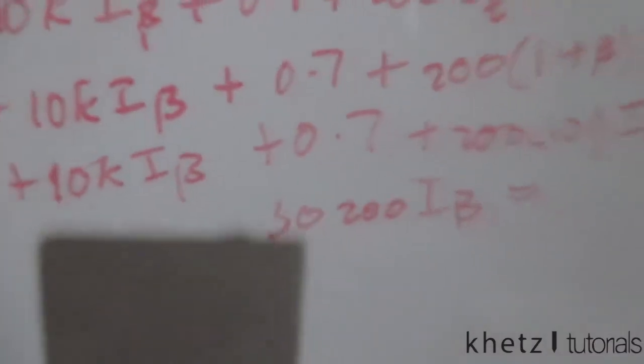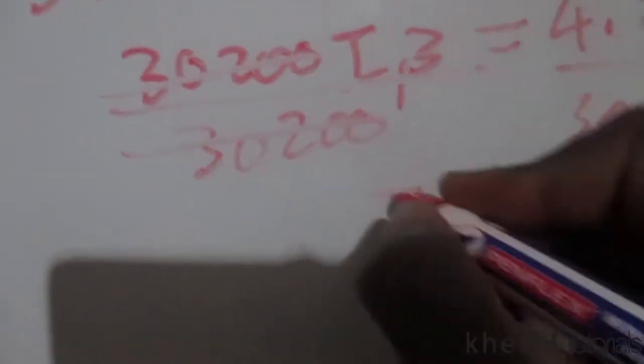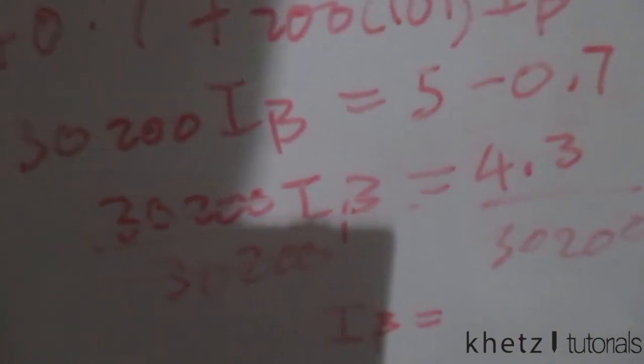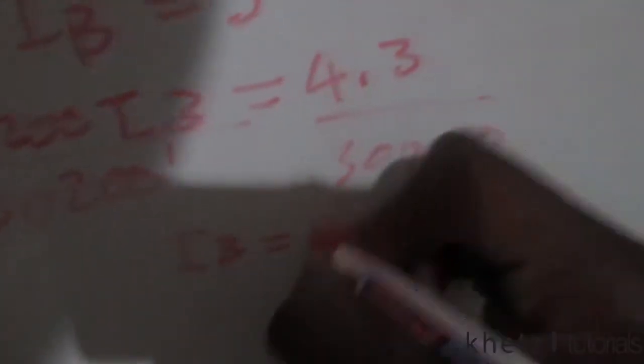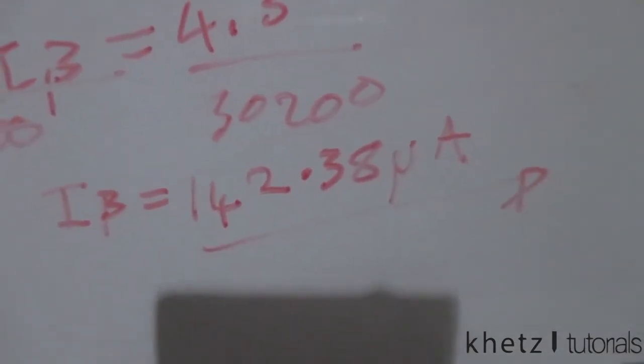Moving the constants to the other side: negative 5 becomes positive 5, and positive 0.7 becomes negative 0.7, giving 4.3 on the right side. Dividing both sides by 30,200, i_beta equals 4.3 divided by 30,200, which gives approximately 142.3 microamperes. We now have i_beta and beta.